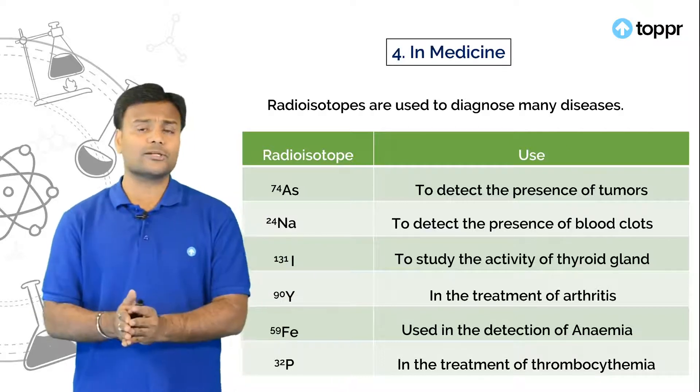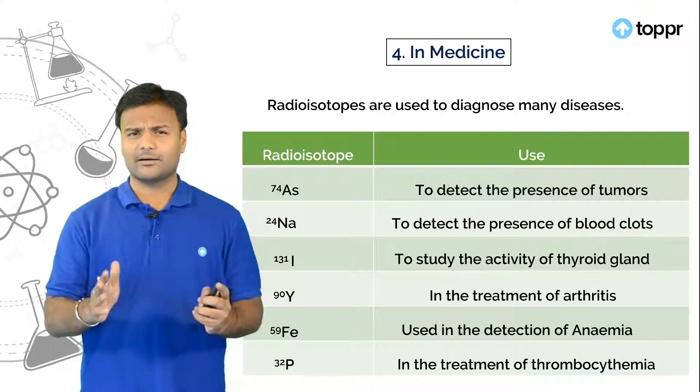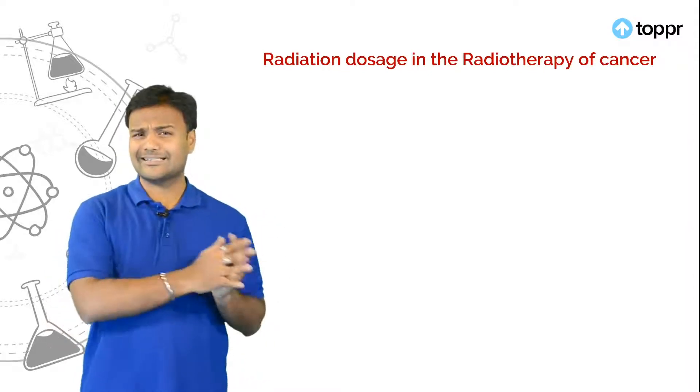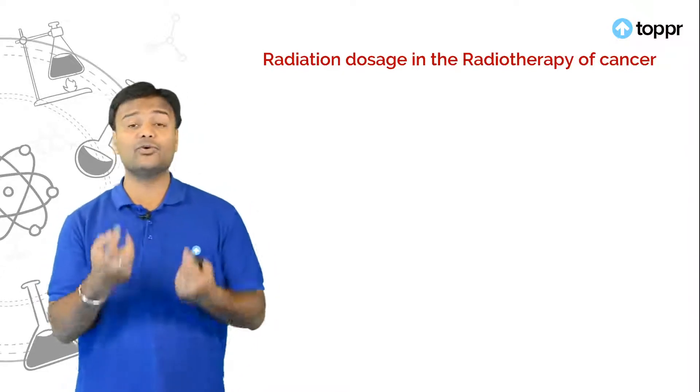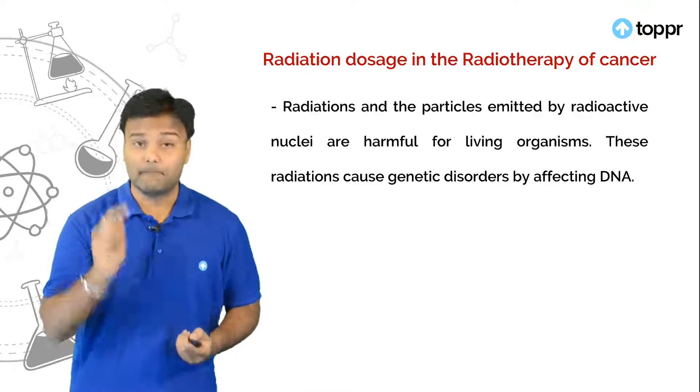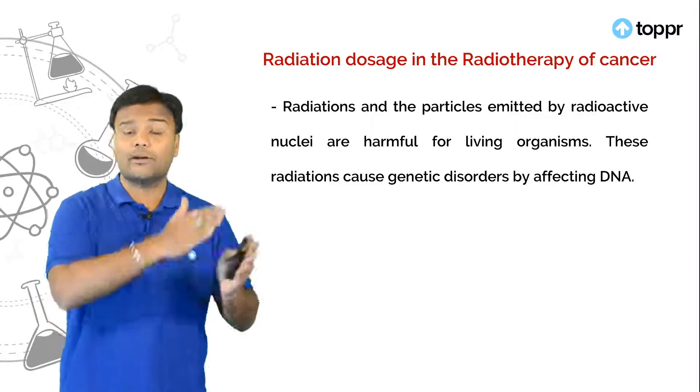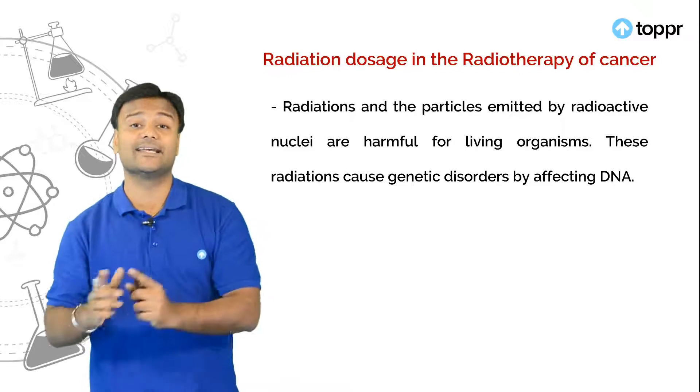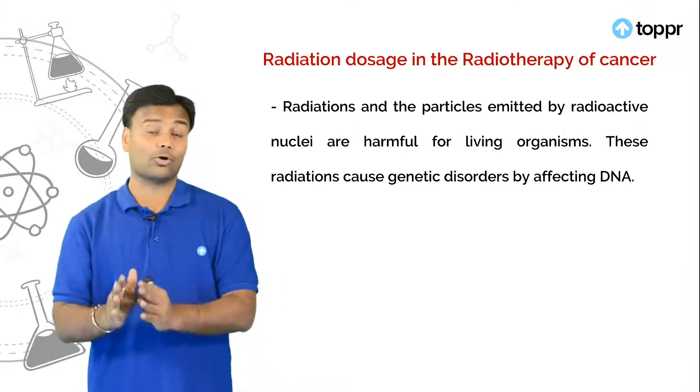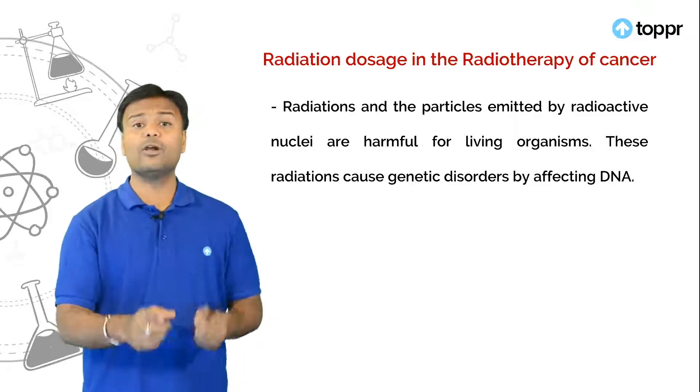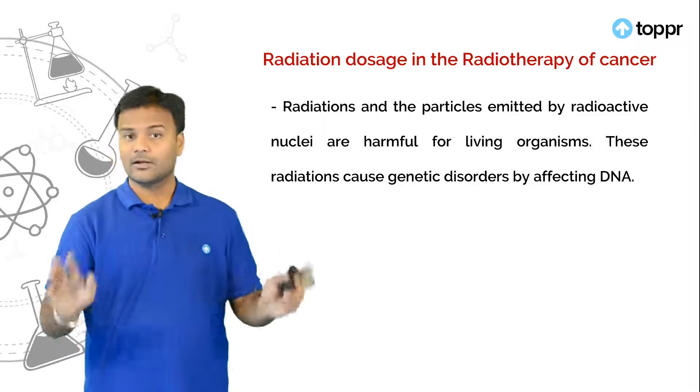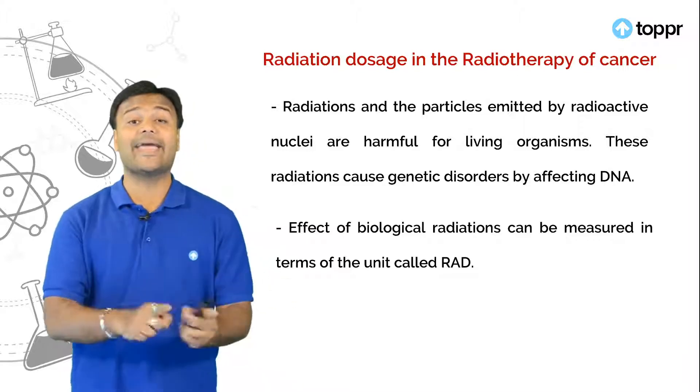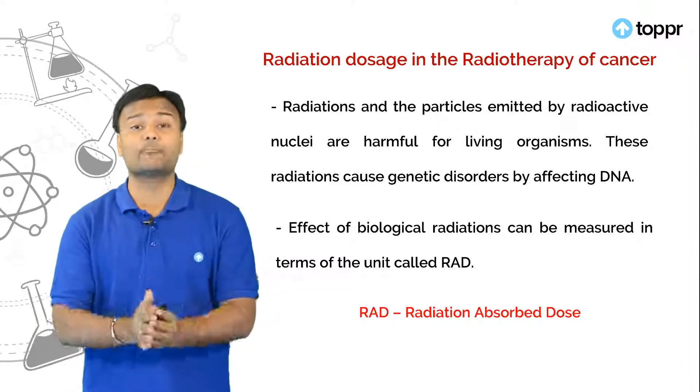So we have seen various uses of these radioactive isotopes. But what do you think the radiation doses in the treatment of cancer do you think these can be preferred. Yes you have to think when you are exposed to excess of radiation. Because especially in the treatment of cancer if you are exposed for a prolonged period then definitely there will be genetic disorders especially in the DNA which leads to death also some of the times. So you have to be very careful when you are exposed to radiation. Also these biological radiations can be measured in terms of RAD nothing but radiation absorbed dose.